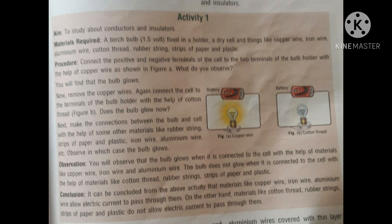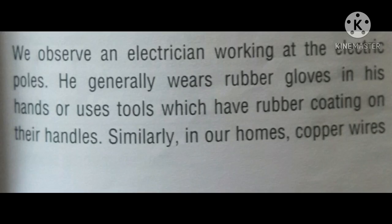From this activity, we can conclude that materials like copper wire, iron wire, and aluminum wire allow electric current to pass through them, so they are conductors. On the other hand, materials like cotton thread, rubber string, strips of paper and plastic don't allow electric current to pass through them, so they are insulators.